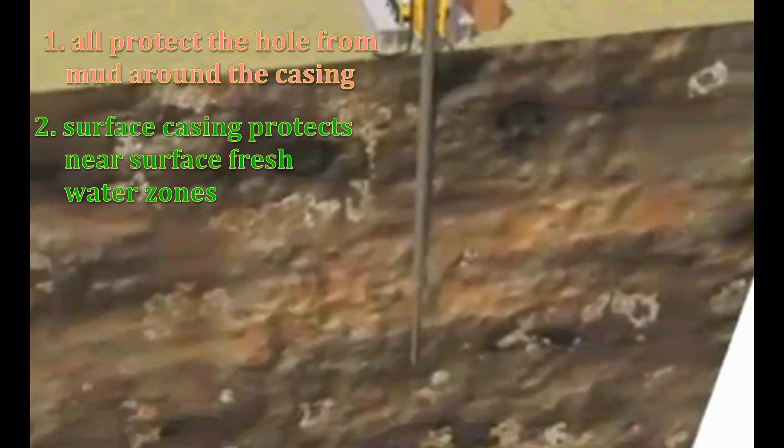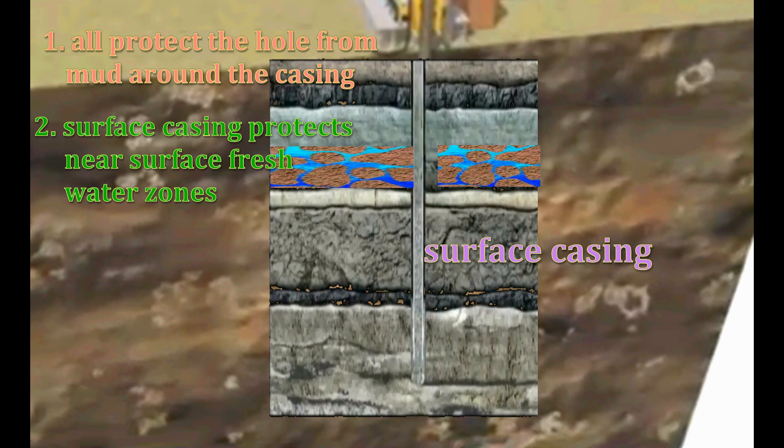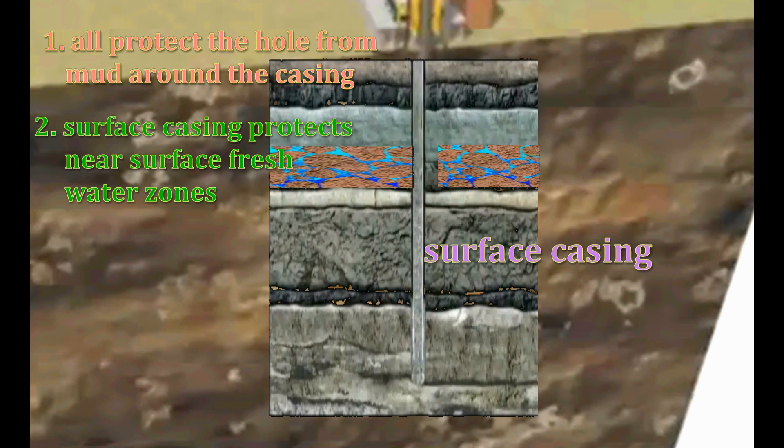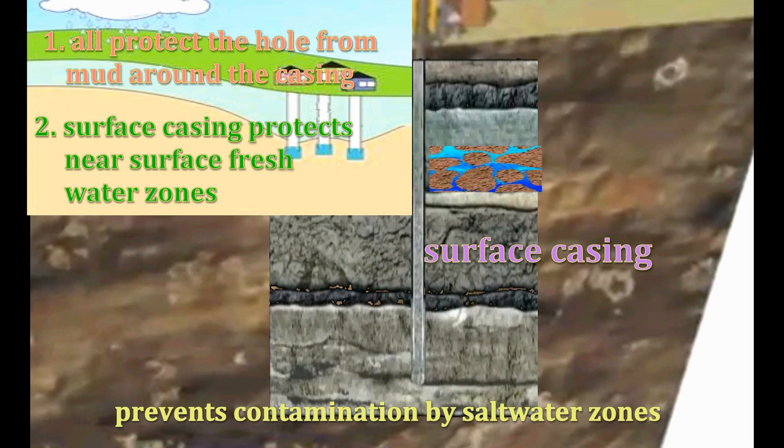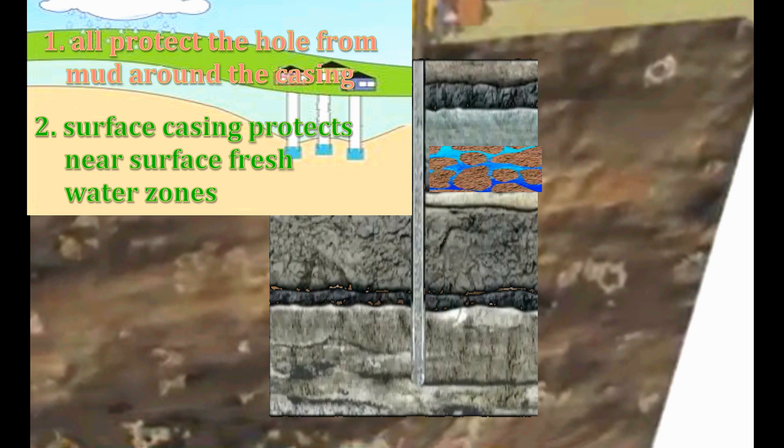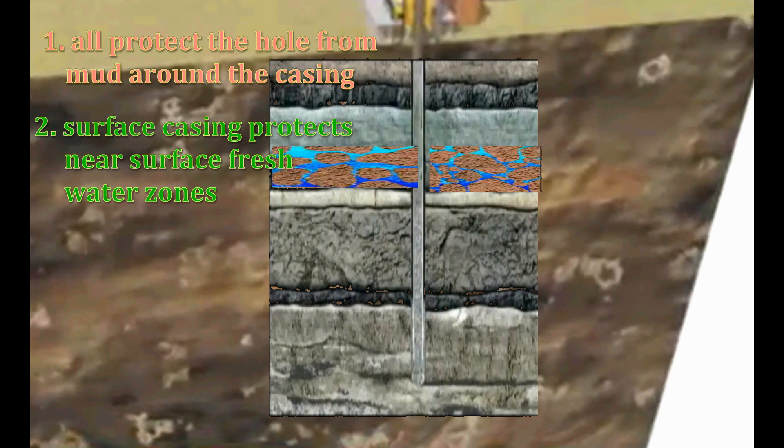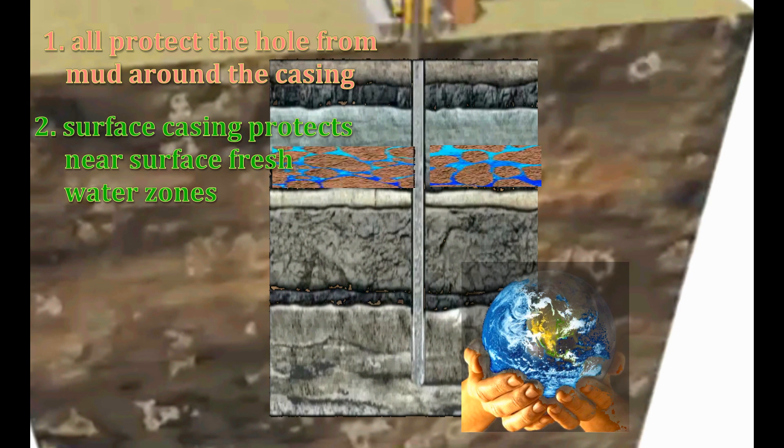A second function relates only to surface casing. This casing protects near-surface freshwater zones from contamination by deeper saltwater zones. Onshore, people rely on these freshwater aquifers. Polluting these aquifers is usually prohibited by law or can create serious environmental issues.